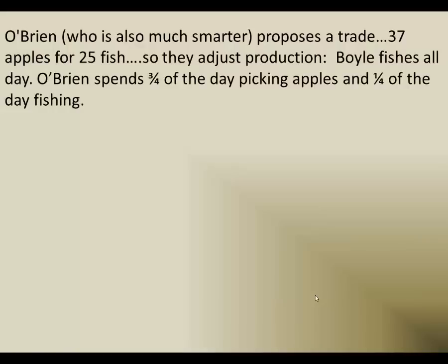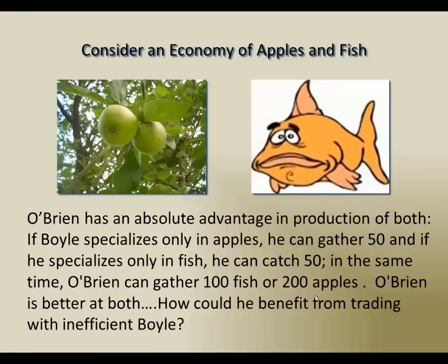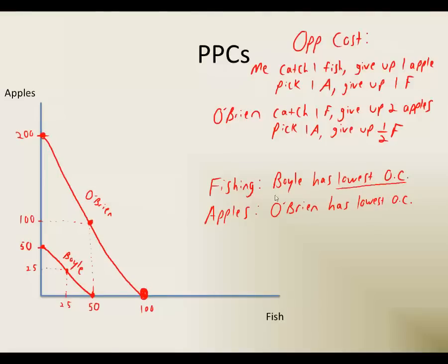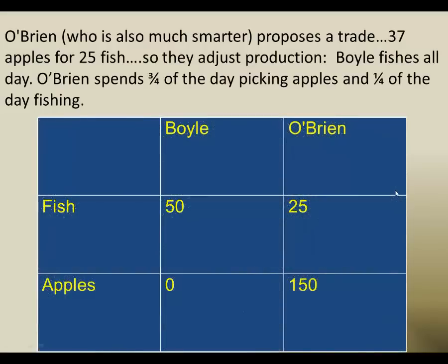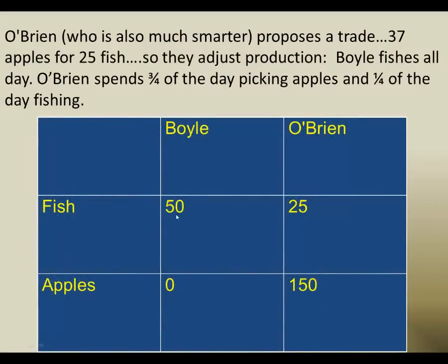So how can we do better than that? Bill's a bit smarter than I am and he wants to trade. He says he'll trade me 37 apples for 25 fish. Now I know that I have the comparative advantage in fishing — I have the lowest opportunity cost of fishing. If we're going to specialize, I should specialize in fishing, so I'm going to fish all day long. O'Brien is going to specialize as well — he's going to spend three quarters of his day picking apples. In a full day he could pick 200, so three quarters of that is 150.